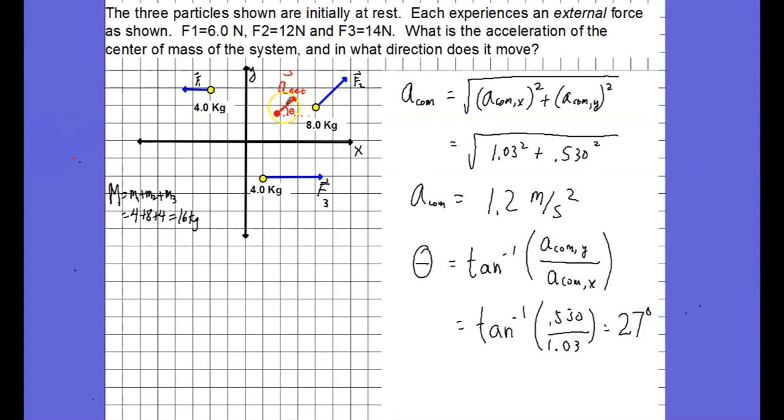So here is my center of mass location. Notice there is actually no mass located there, but that is the location of the center of mass. And that position in space is accelerating with an X component of 1.03 meters per second squared, a Y component of 0.53 meters per second squared. So using Pythagorean theorem, an overall acceleration of 1.2 meters per second squared in a direction of inverse tangent of the Y component over the X component, which gives me 27 degrees.